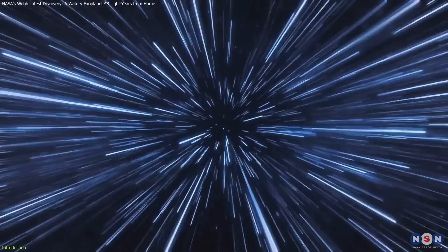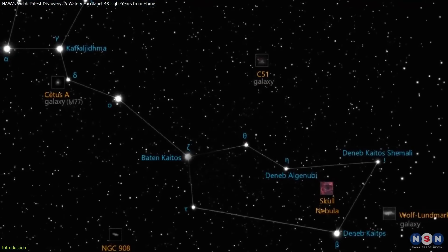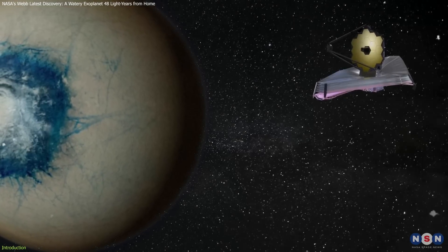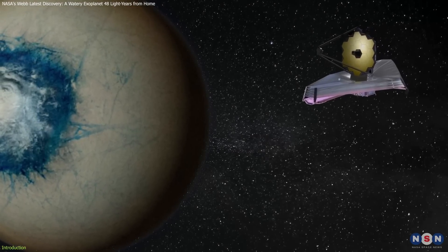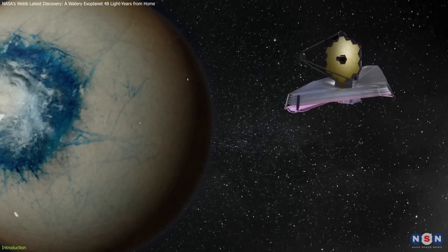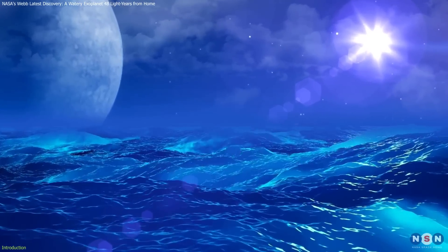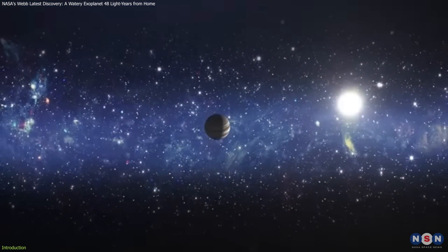Located just 49 light-years away in the constellation Cetus, this exoplanet, through observations from the James Webb Space Telescope, is emerging as a front-runner in our quest for liquid water and perhaps life beyond our solar system.